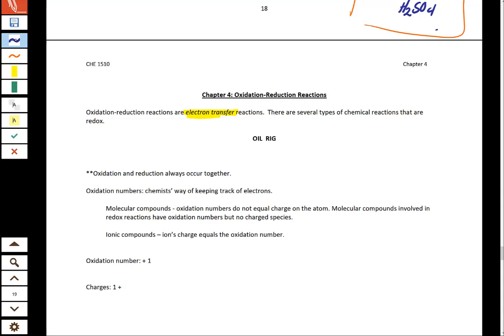That one species is losing electrons, so oxidation occurs when something is losing electrons, and then reduction occurs when something is gaining electrons.